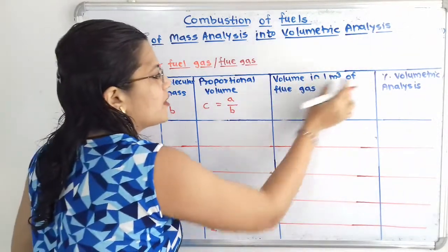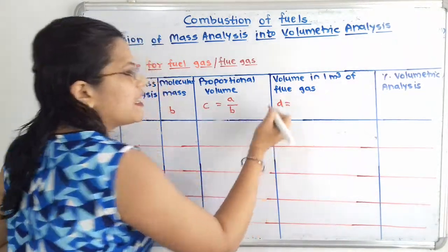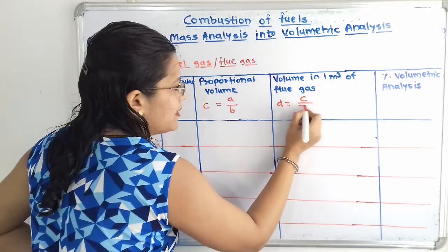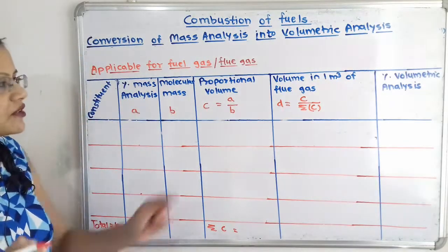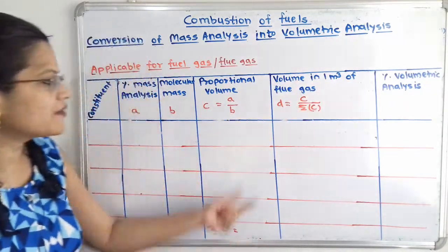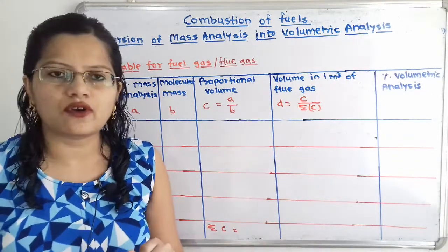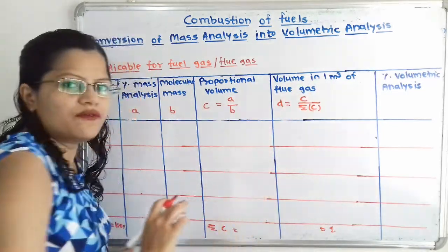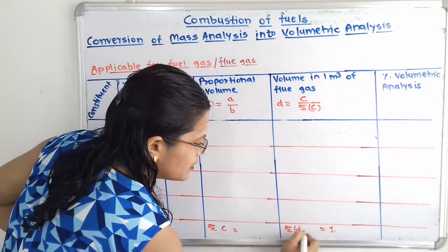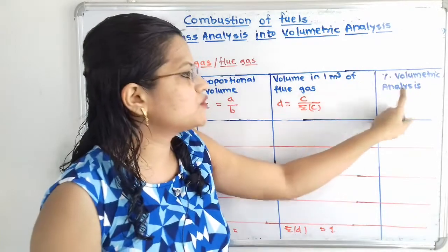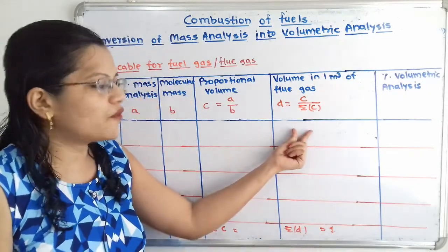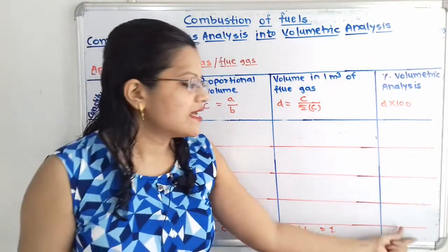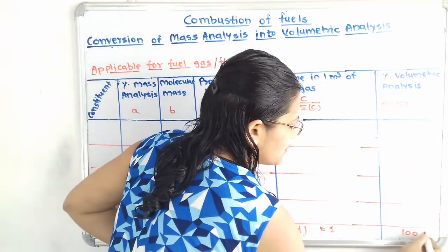The next column is volume in 1 metre cube of flue gas, called D, calculated as D = C divided by summation of C. We can cross-verify by adding all D values; the summation of D should equal 1. The final column is percentage volumetric analysis, calculated as D multiplied by 100. Adding all these percentages should give 100%.